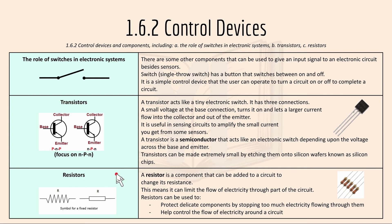And resistors: a resistor is a component that can be added to a circuit to change its resistance. This means it can limit the flow of electricity through part of the circuit. Resistance can be used to protect delicate components by stopping too much electricity flowing through them, and it can help control the flow of electricity around a circuit.